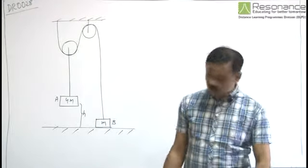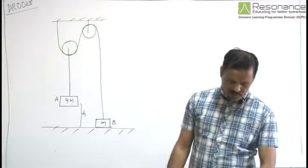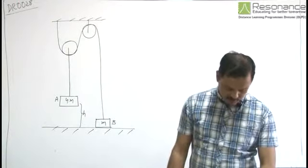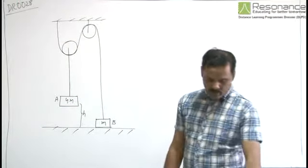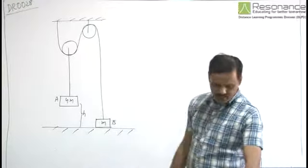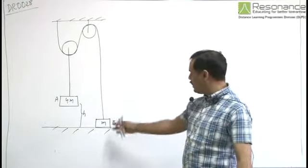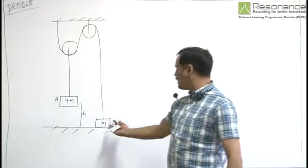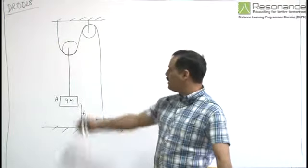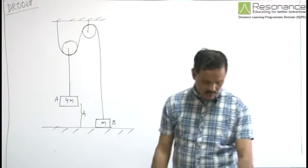In this question, there is an arrangement of blocks and pulleys. The mass of body A is given to be 4 times the mass of body B. We have assumed mass of body B to be M, so mass of body A will be 4M.